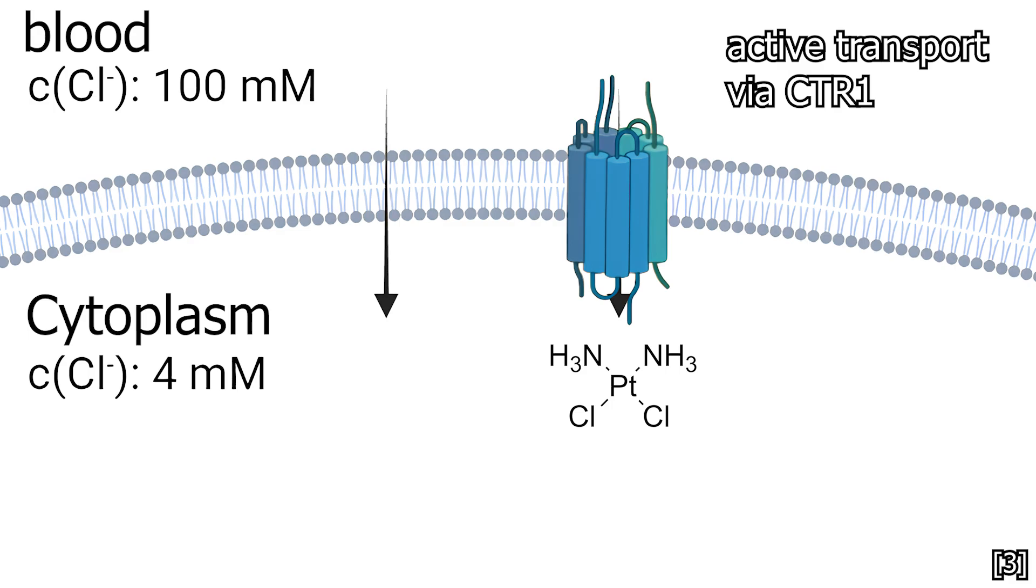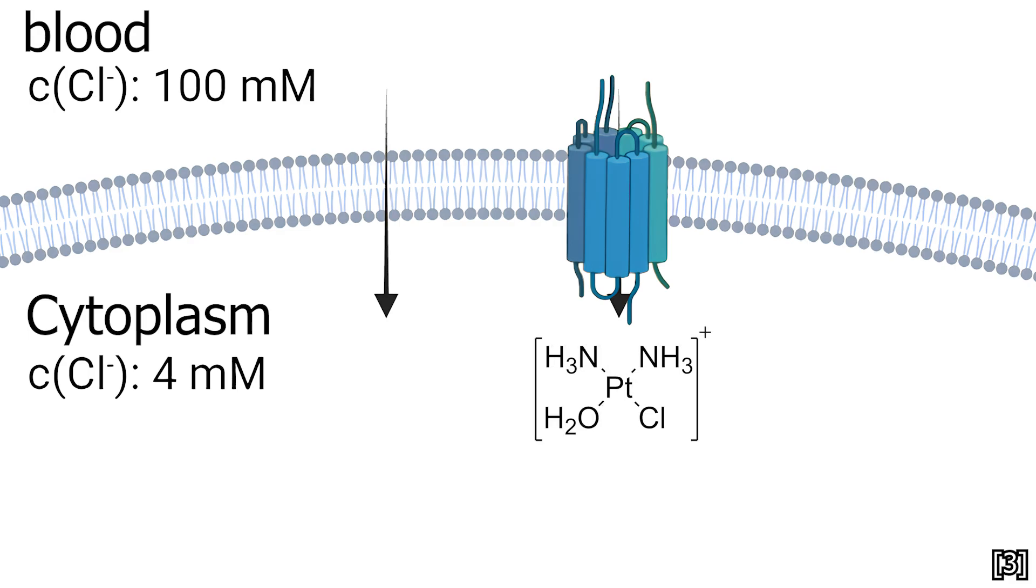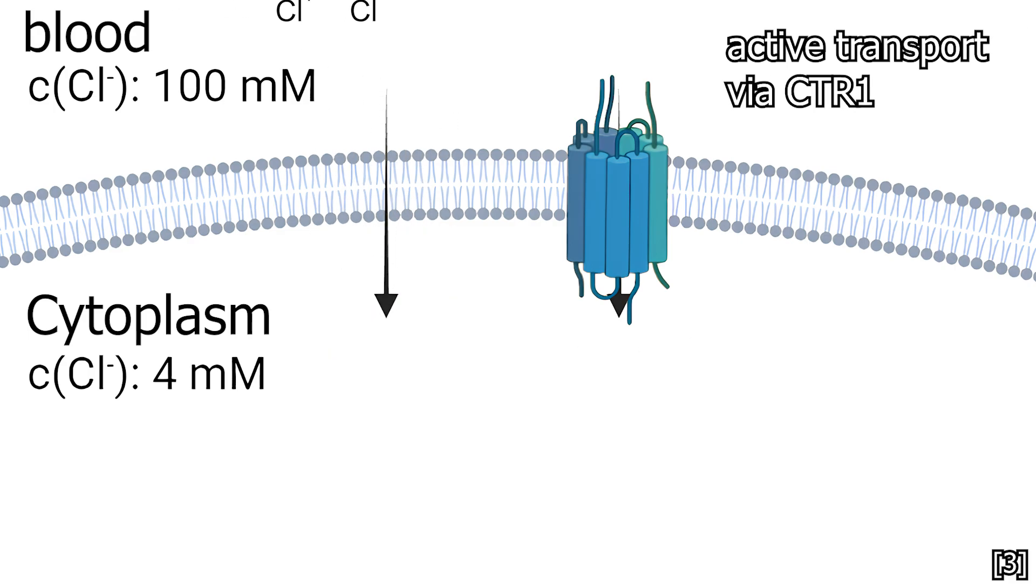Why does this happen only inside the cell? In the blood, the chloride concentration is approximately 100 millimolar, whereas in the cytoplasm, it drops to 4 millimolar. Cisplatin enters the cell either through passive diffusion or active transport, likely mediated by the transport protein CTR1.